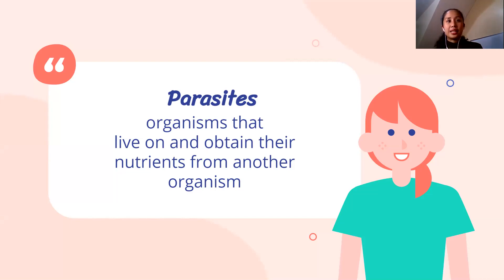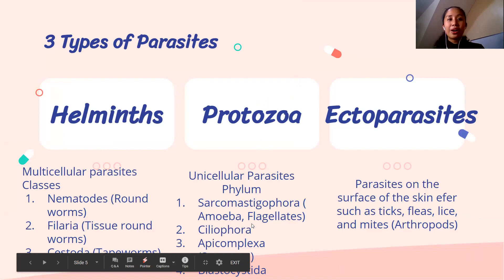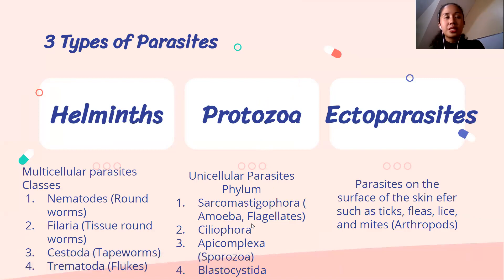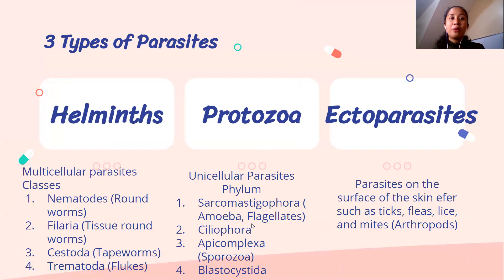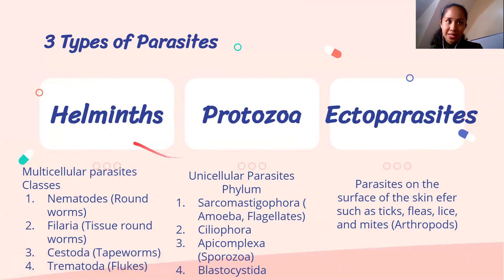We have three types of parasites, and our discussion for the whole semester will revolve around these. After finishing all the laboratory procedures, we will head on to getting to know all the different parasites — and here you need to start memorizing. The three main types are helminths, protozoa, and ectoparasites.